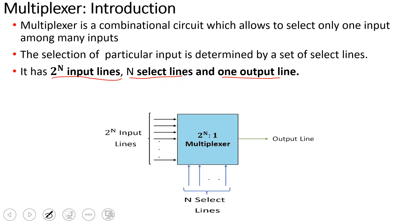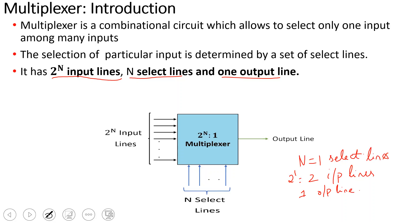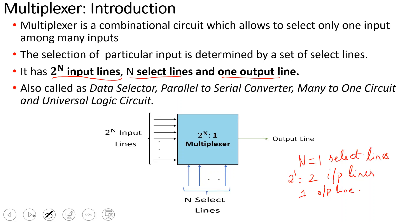The select lines will be n, input lines will be 2^n, and output lines will be 1. Now if n is equal to 1, we will have 2 input lines and 1 output. Multiplexer is also called a data selector, parallel-to-serial converter, many-to-one circuit, and universal logic circuit. These are the other names for MUX or multiplexer.